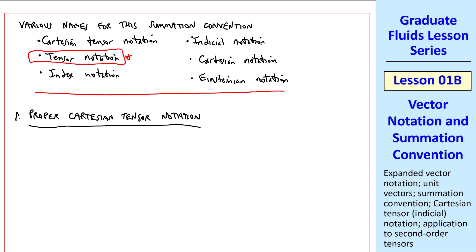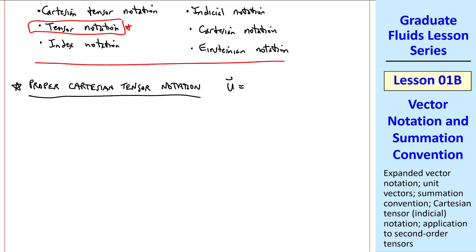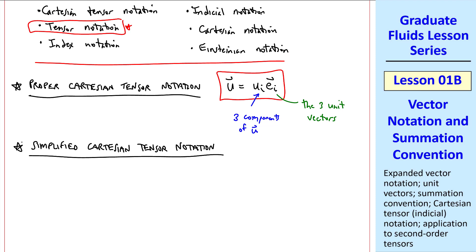Now let me introduce what I call proper or formal Cartesian tensor notation. We would write vector u as ui ei, where ui represents the three components of u, and the ei vectors represent the three unit vectors. As I said in the previous lesson, if we rotate the axes, the directions of these change, and therefore the components change, but u itself does not. u is a physical velocity that does not depend on which axes we choose.